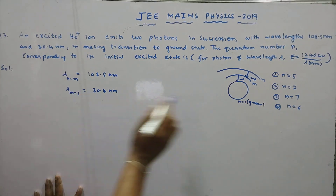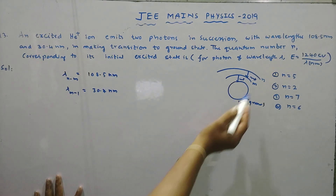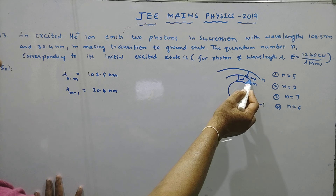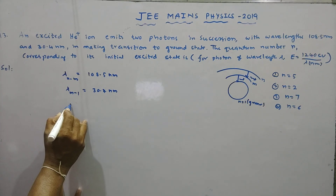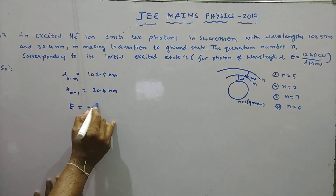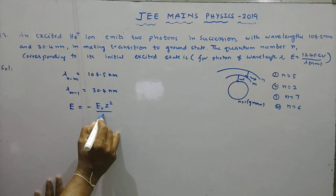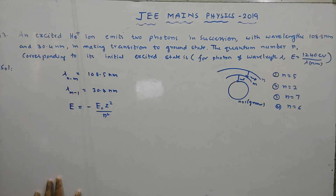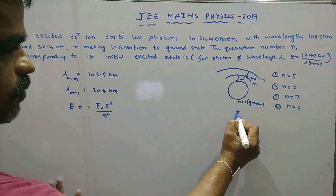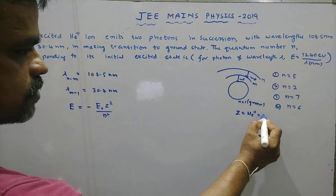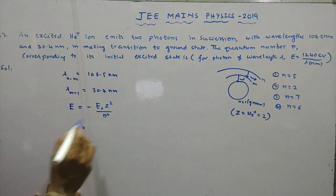What we have to calculate is the quantum number n corresponding to the initial excited state. The electron starts at n, then jumps to m state, then it jumps to ground state. For this, we have the formula energy equal to minus E-naught Z-squared by n-squared. Here Z equals 2 for the helium plus ion.